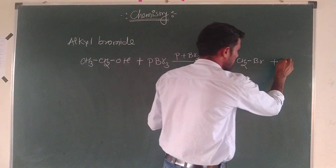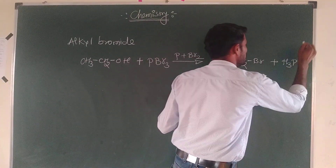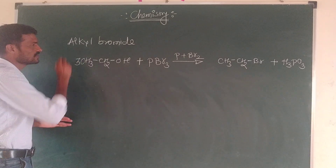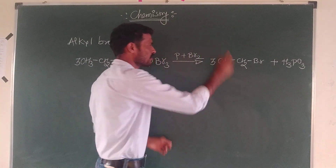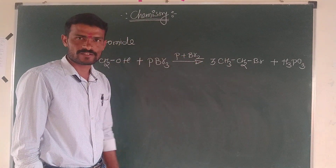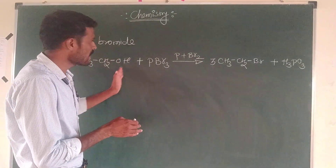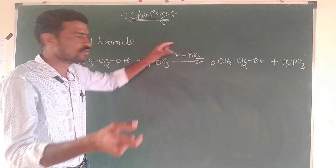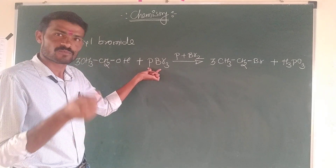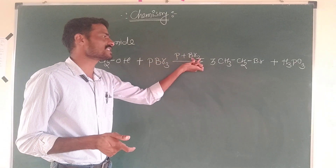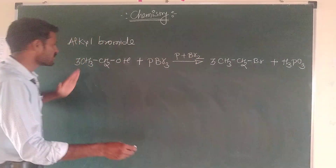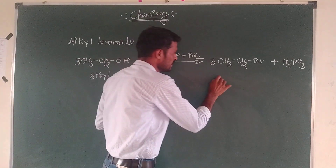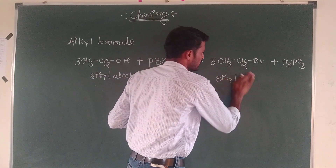The PBr3 product is H3PO3. Balance the reaction — balance the phosphorus and bromine. The alcohol reacts with phosphorus and bromine.